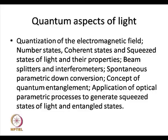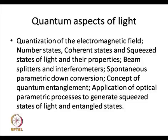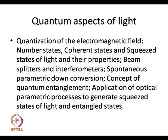The second part is looking at the quantum aspects of light. We will start with quantization of the electromagnetic field and look at the concept of photons which arises from there. We'll look at states of light called coherent states, squeezed states, and some other properties. We'll look at interesting devices like the beam splitter — which is a very simple device but has very interesting properties in quantum mechanics — and how it is used in interferometers. There is spontaneous parametric down conversion, a very important process used in many quantum applications of light, as well as quadrature squeezed states and entangled states of light.